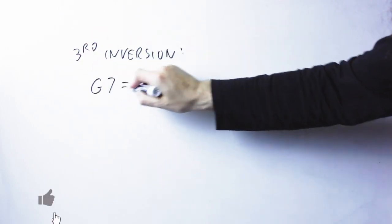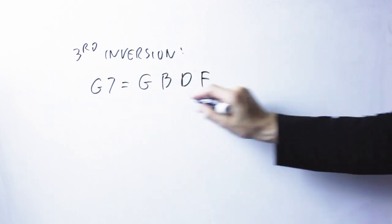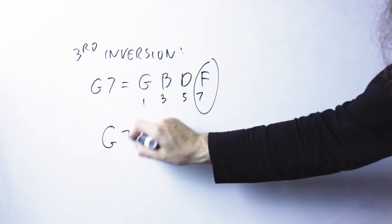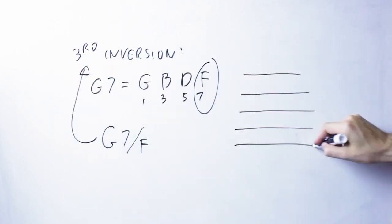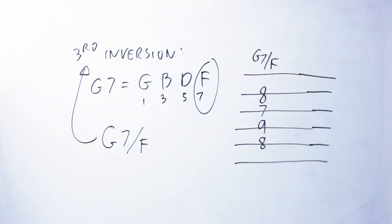What is a third inversion seventh chord? Well, take any seventh chord. I'm going to take a G7 right now. A third inversion chord is a chord where the seventh is at the bass. So the G7 chord is G, B, D, F. The seventh is F and I'm just going to play the G chord with the F at the bass. That's a third inversion G7 chord.